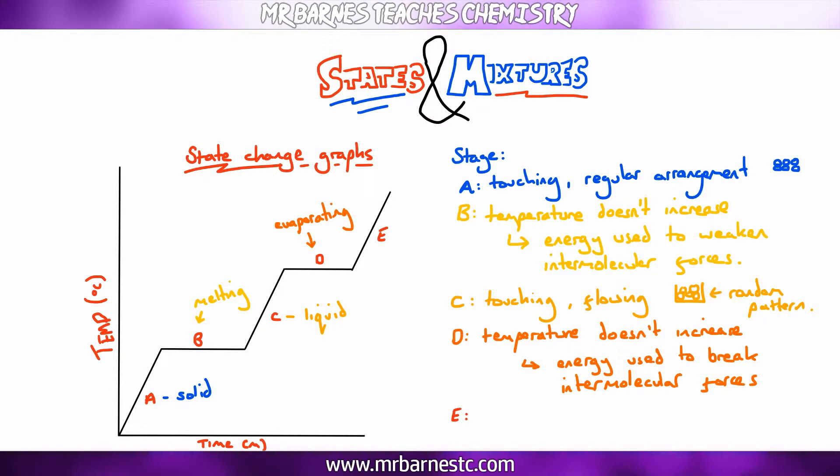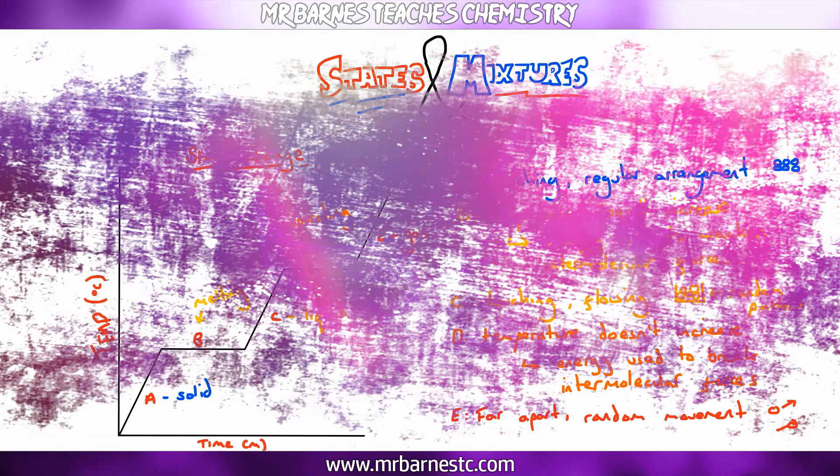And then at stage E, it's your gas. Therefore, they're far apart. It's a random movement. And you've got your arrow lines on them.